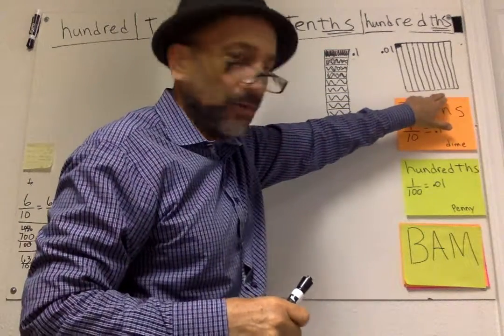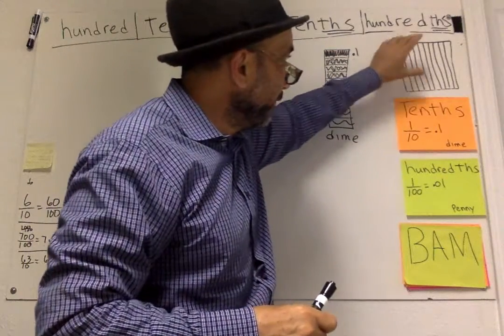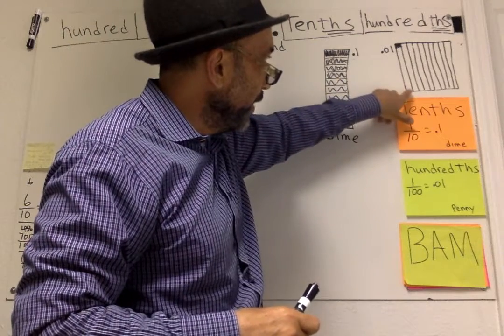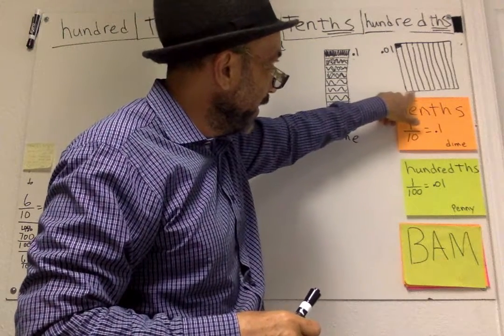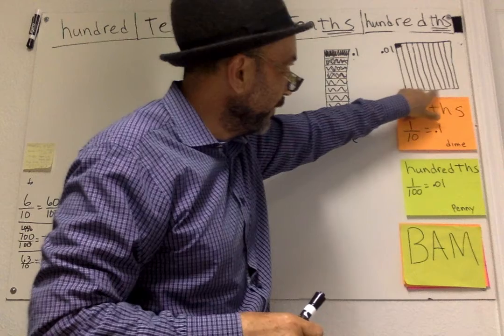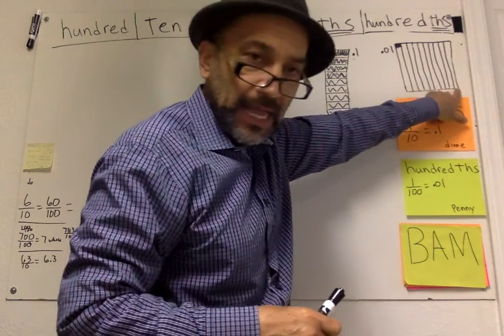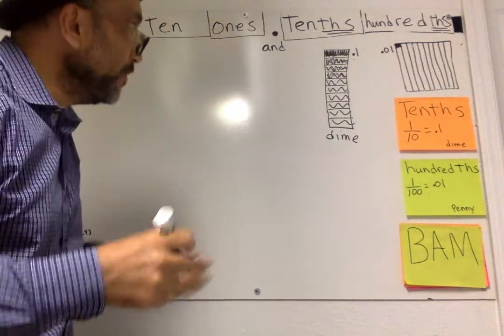Look, here's a whole dollar, right? This represents. So each row, 10, 20, 30, 40, 50, 60, 70, 80, 90, 100. So that's one hundred.